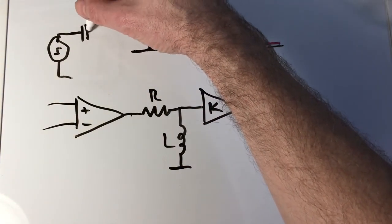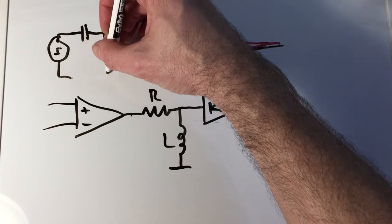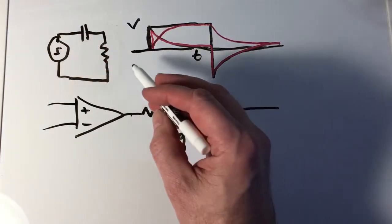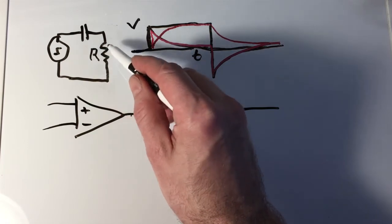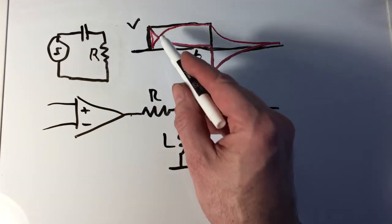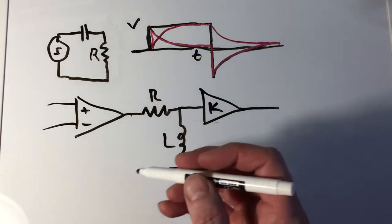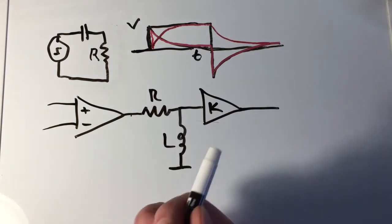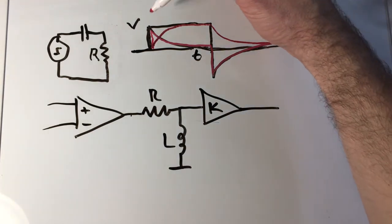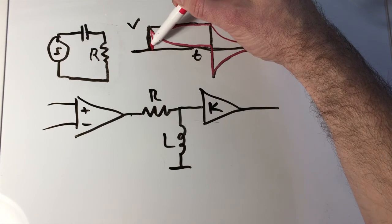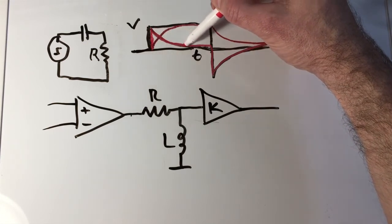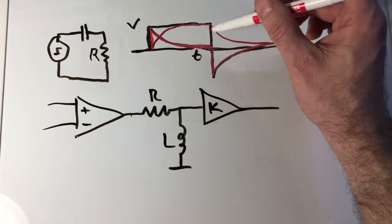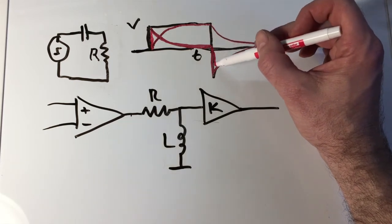Put our capacitor now in series and the resistor in parallel. And then if we measure the voltage across the resistor, it's going to look like the RL circuit response. In other words, when we have the change, when our step goes positive, the resistor voltage is going to jump up, then it's going to exponentially decay back down to zero. It would do the same thing here for this negative transition of the step.